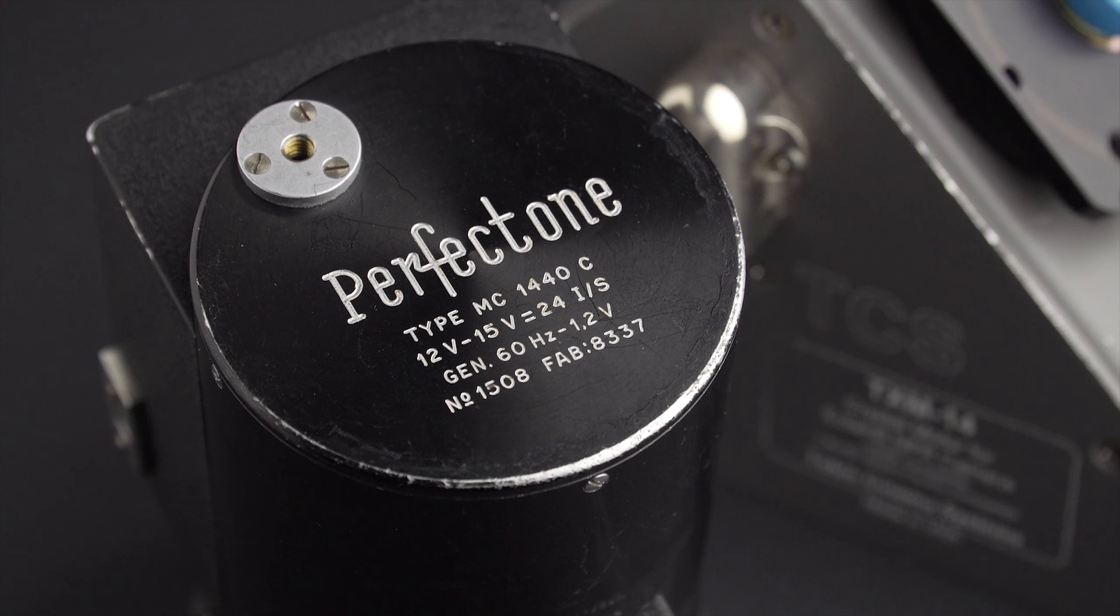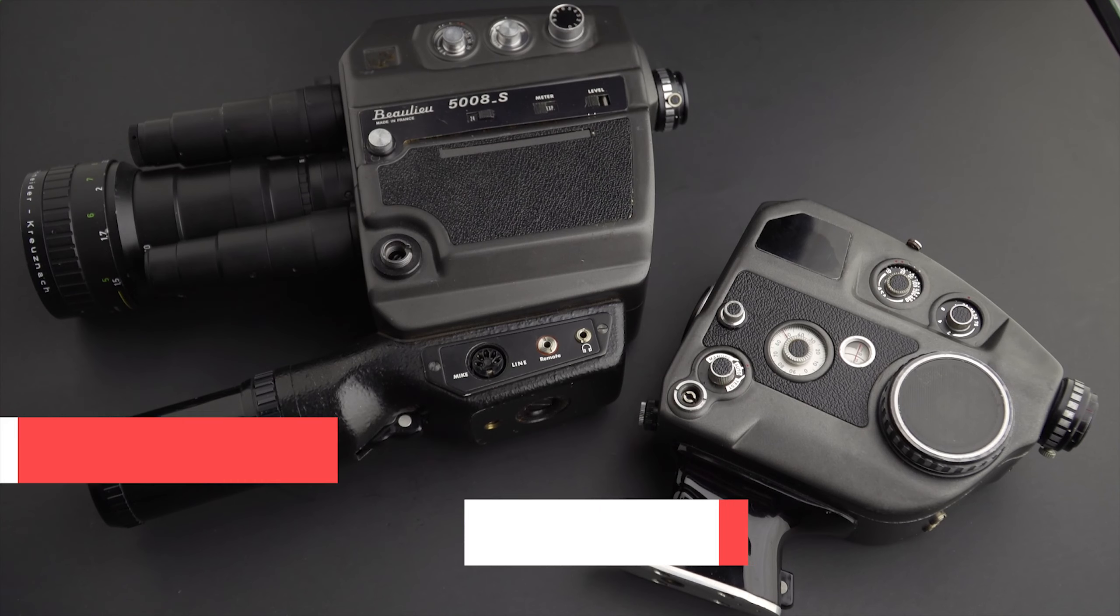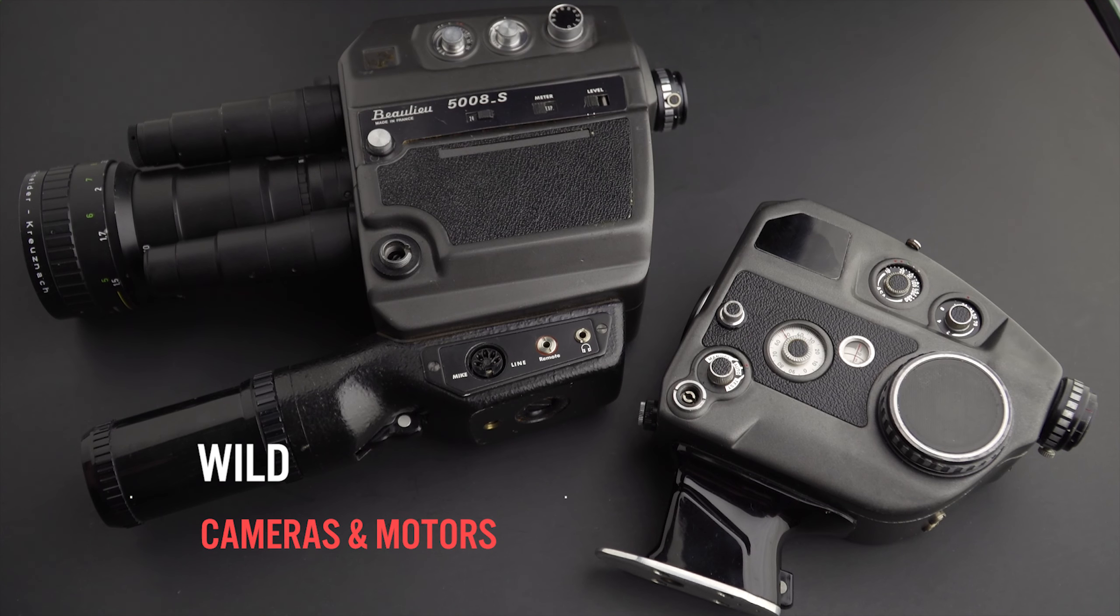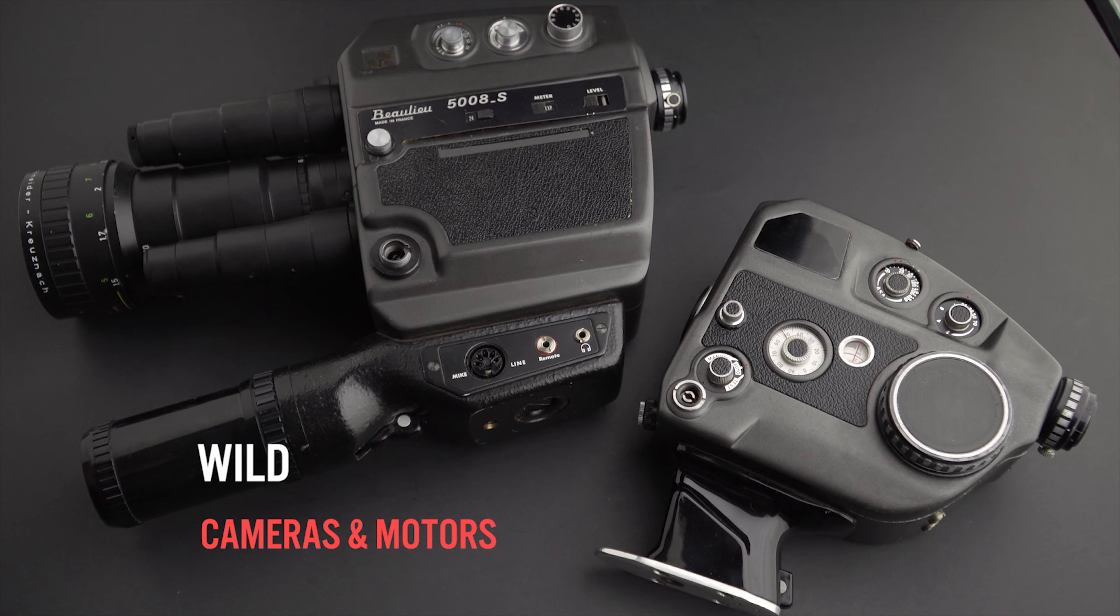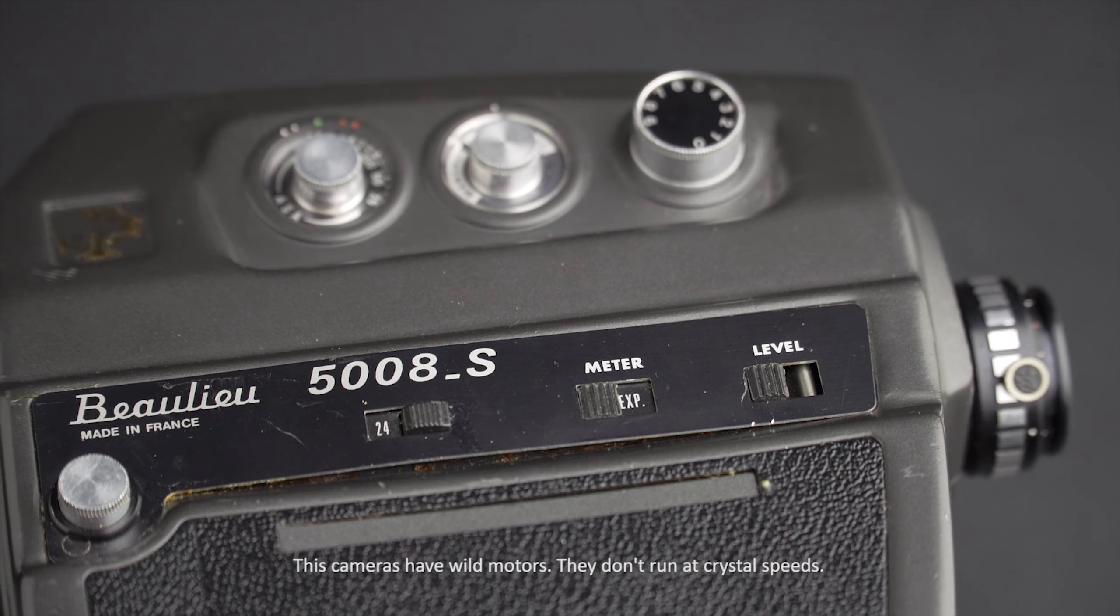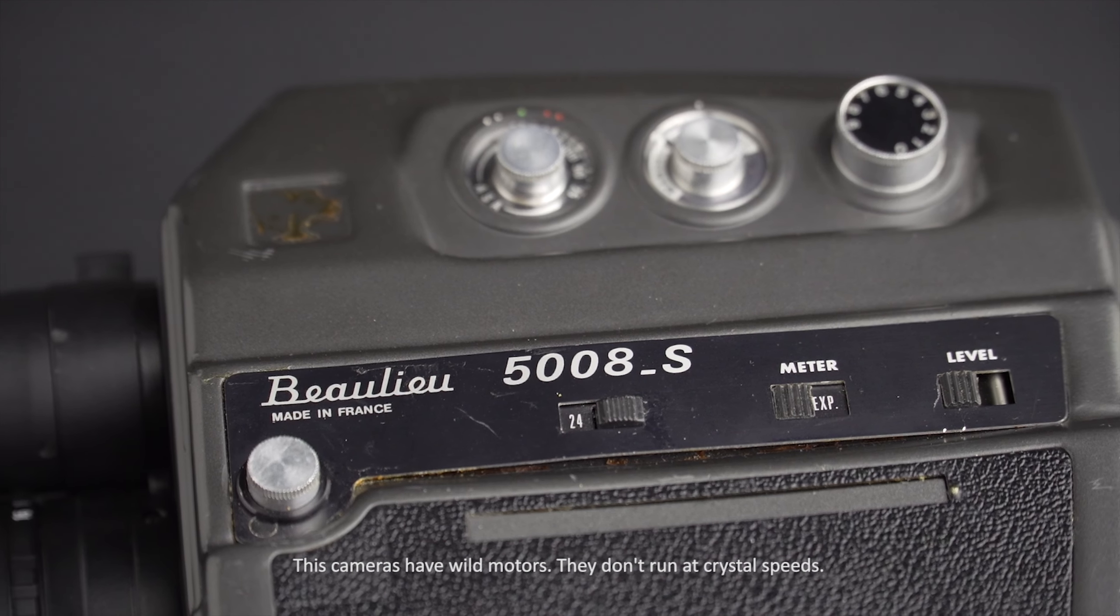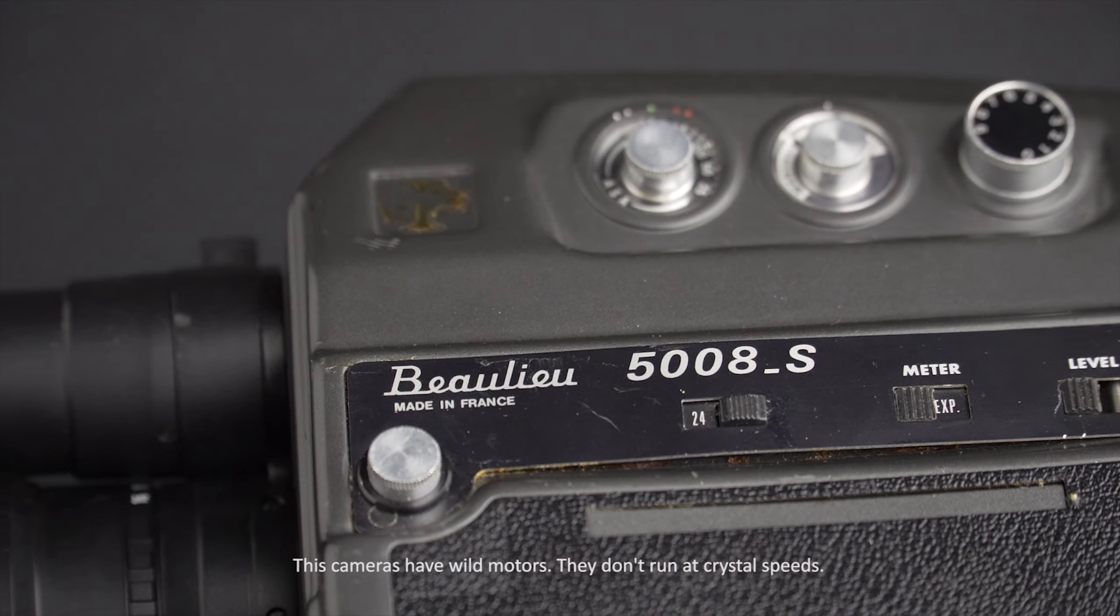To talk about electrical cameras or motors, I'm going to separate them into three categories: wild, pilot tone or similar systems, and crystal sync. As I mentioned before, when electricity was available it was used to power studio cameras, which at the time were wild. Wild is a term that describes a motor that runs more or less at a certain speed but varies depending on changes in voltage, the load being carried by the motor, friction, and other factors.